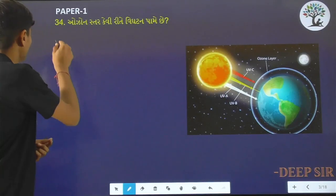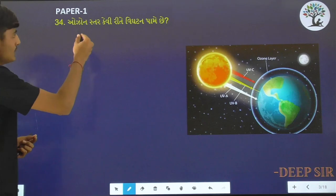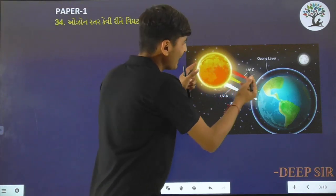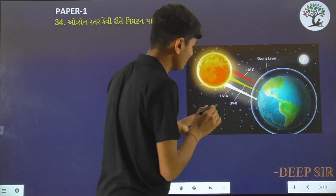The question is number 34. What is the ozone layer? There are different diagrams and photographs. We can see the ozone layer inside.